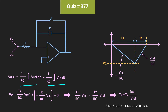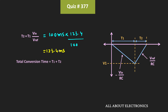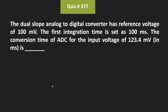Here we already know the value of the input voltage, the reference voltage, as well as t1. So with the help of it, we can easily find the value of t2. Here t1 is equal to 100 ms, the input voltage Vin is equal to 123.4 mV, and the reference voltage is equal to 100 mV. That means t2 is equal to 123.4 ms, and the overall conversion time is equal to t1 plus t2, that is 100 ms plus 123.4 ms, which equals 223.4 ms. So this will be the overall conversion time of this dual slope ADC.